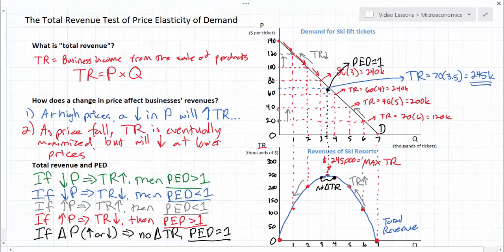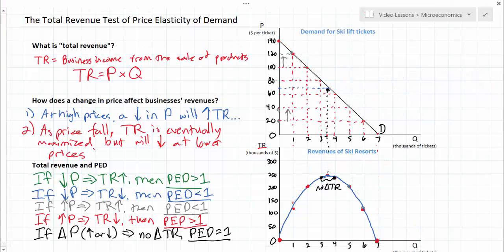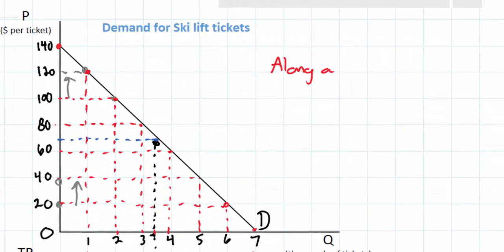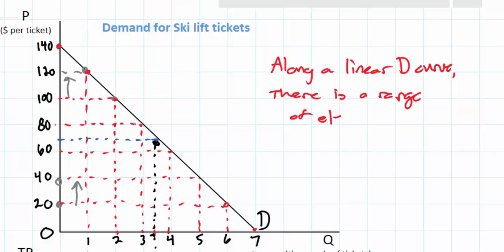So let's wrap up this lesson with some simple conclusions here. We have shown that along a straight line demand curve, put some notes over here, along a linear demand curve, there is actually a range of elasticities. A range of elasticities.